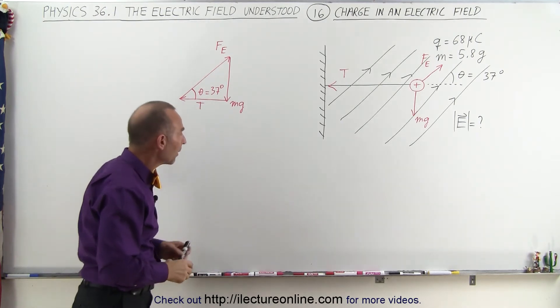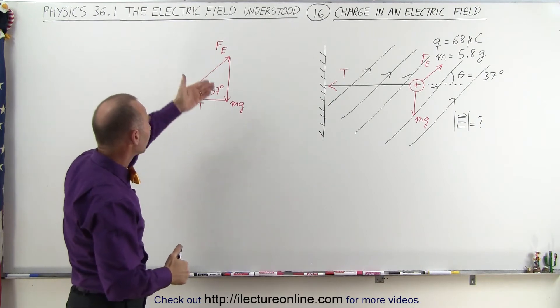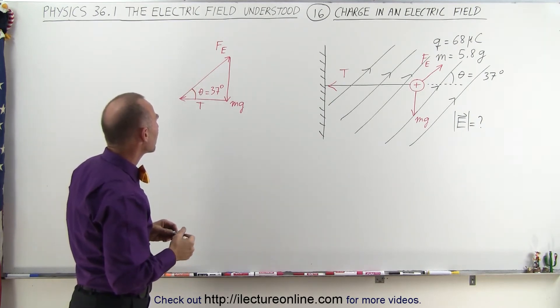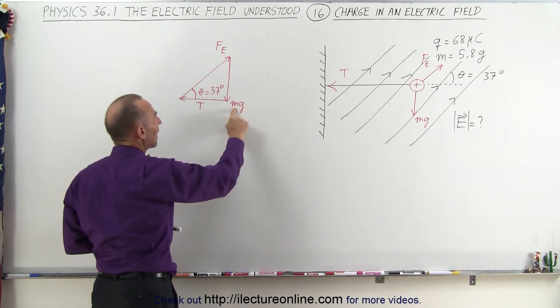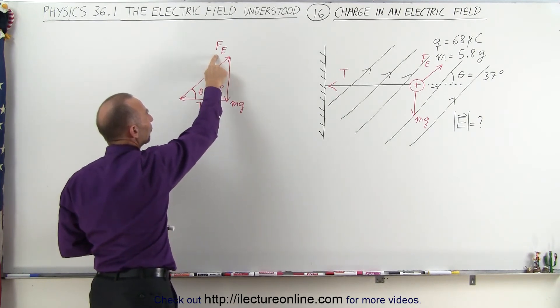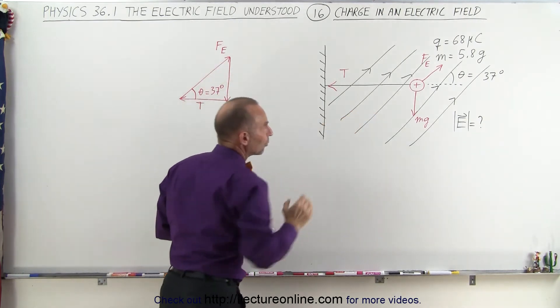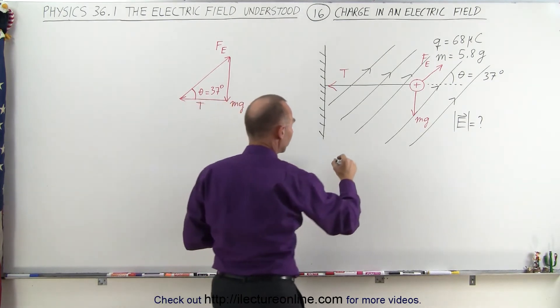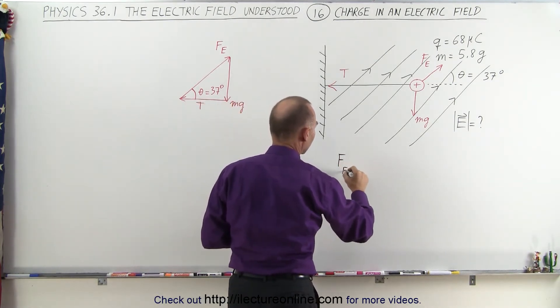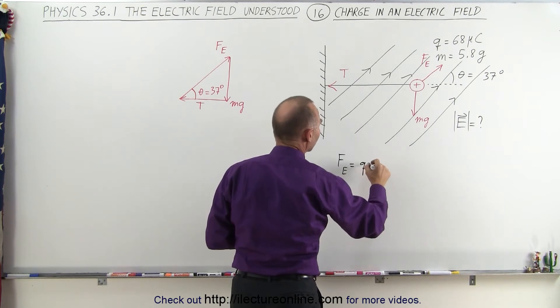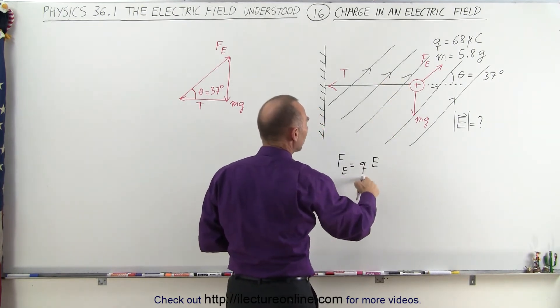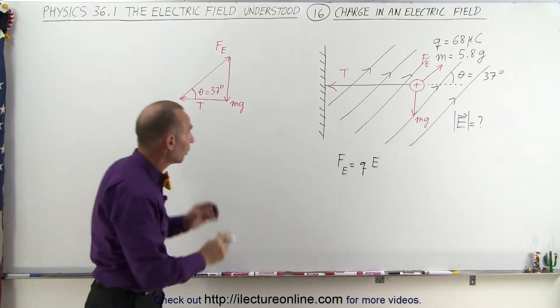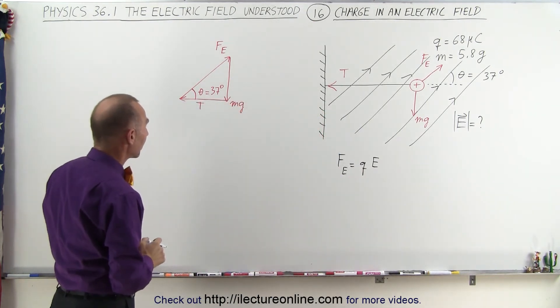Now, we should be able to come up with a relationship between these three. We can see here that we don't know the tension, but we do know the weight because we know the mass, and we can figure out the force due to the electric field because we know that the equation tells us that the force due to the electric field is equal to the charge times the strength of the field. And since Q is known, we can somehow figure out what E will be equal to when we solve this problem.